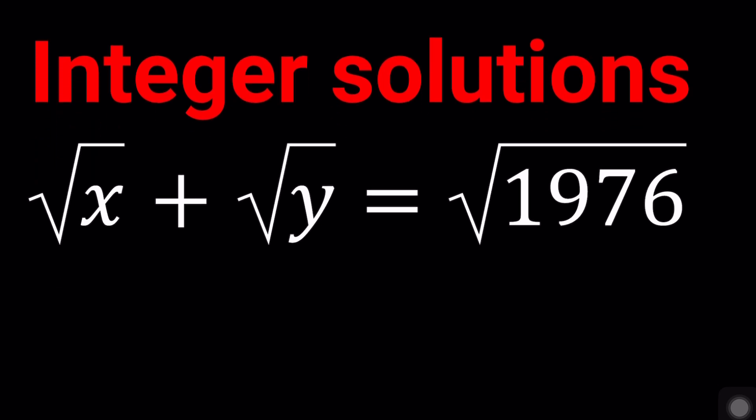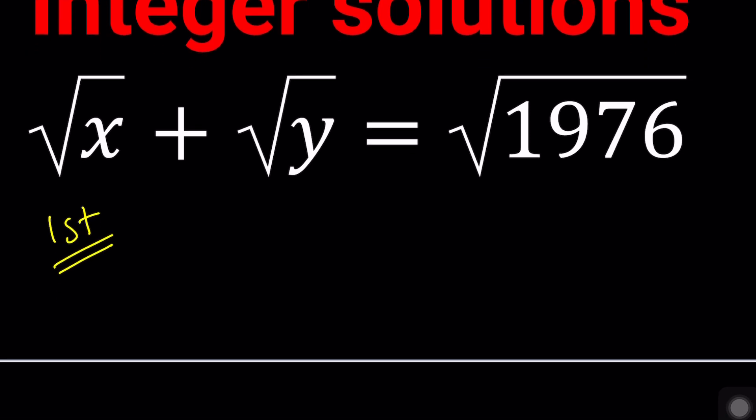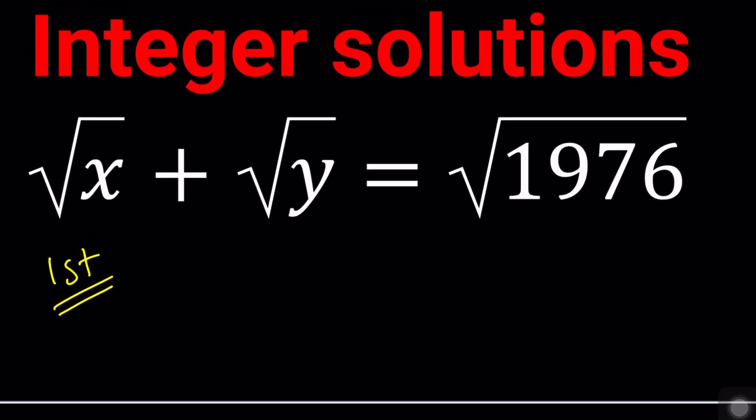So my first approach is going to be isolating one of the radicals and then squaring both sides, because whenever you have a radical you want to get rid of them as much as possible. This will do it.